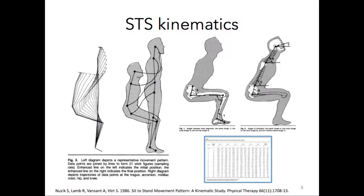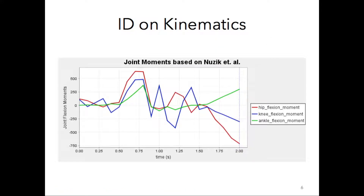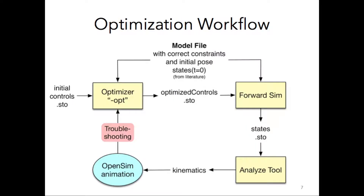In the literature, I found 20 data points over 2 seconds of a sit-to-stand for each of the angles defined in the top right figure. Using the angle definitions, I crunched the numbers into OpenSIM, where I used the inverse dynamics tool to extract the baseline joint torques for later comparison. While this data is an important starting point, using this method alone cannot predict how an exosuit may affect kinematics. On the other hand, optimization can help us do this.